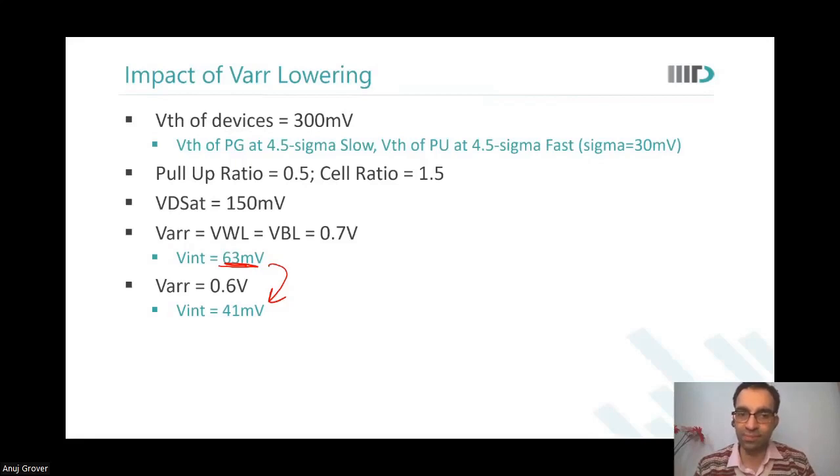Are you able to see this? Since we are not varying the word line. So VDD lowering, VDD lowering, but not lowering word line and bit line is a write assist technique. What goes for a toss when we do this quickly?